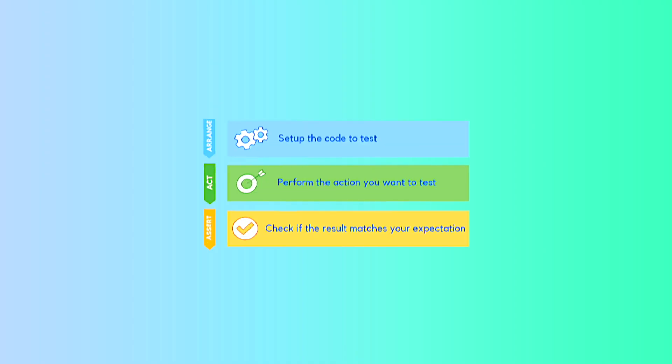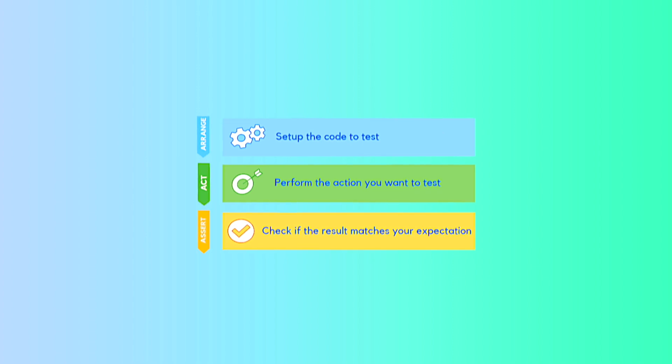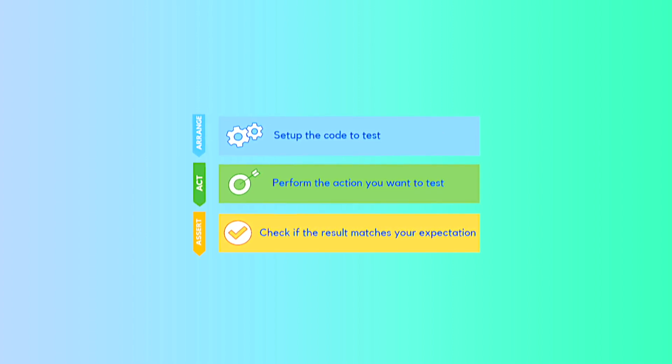The arrange, act, and assert pattern is a software development testing pattern that allows you to write and read testing code much faster. It also allows you to pick up and fix errors in those tests as well.